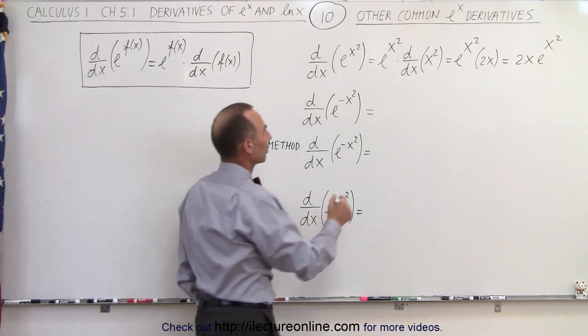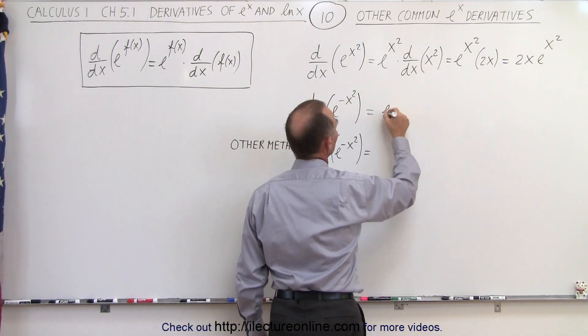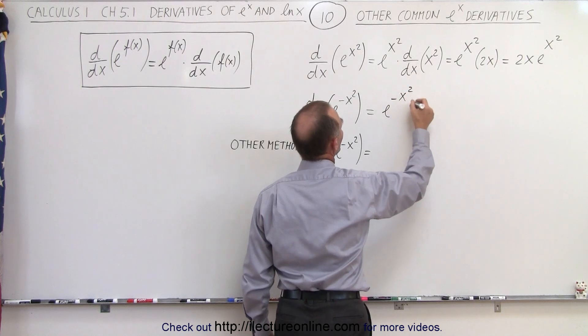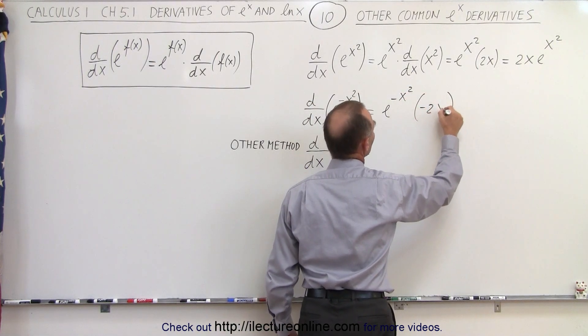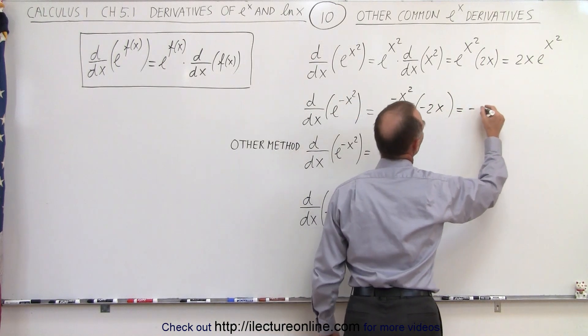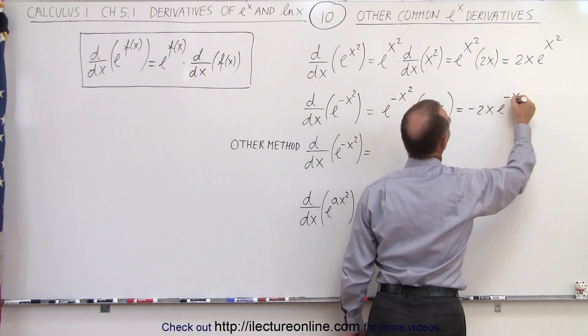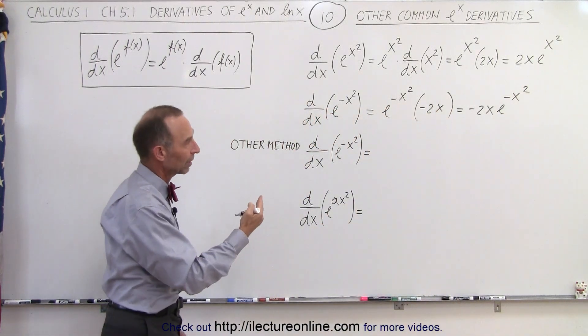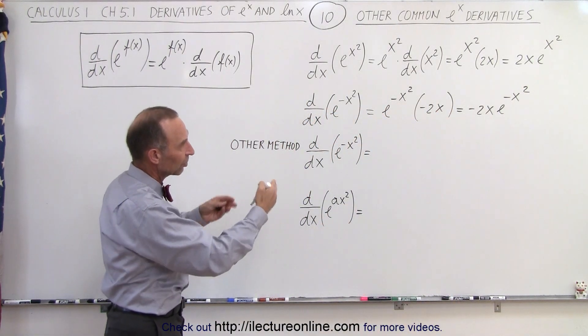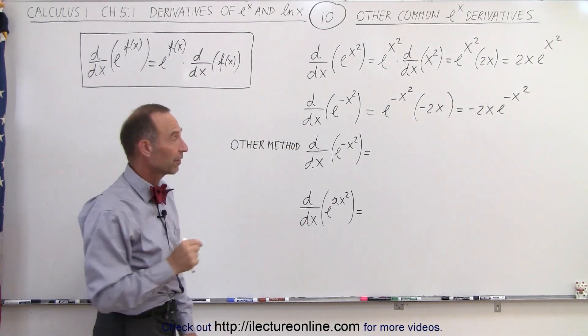We do the same over here. So here we can say that this is equal to e to the minus x squared times the derivative of the exponent, which is minus 2x, which becomes minus 2x e to the minus x squared. So that makes it a little bit faster. But again, just realize you simply copy the function and then multiply that times the derivative of the exponent.